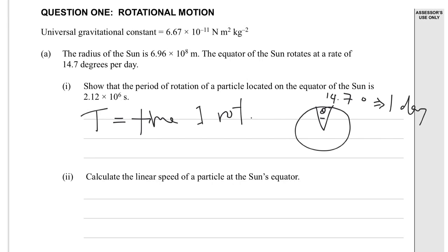Shouldn't really write it equals, because they're different quantities. One's an angle, one's a time measurement. So we would have to do 360 degrees divided by 14.7, and that's going to give us the number of days. So number of days.